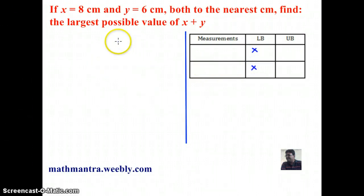Let's write down the upper bounds for x and y. x here is given as 8 centimeters and y is given as 6 centimeters. And both these measurements are correct to 1 centimeters.